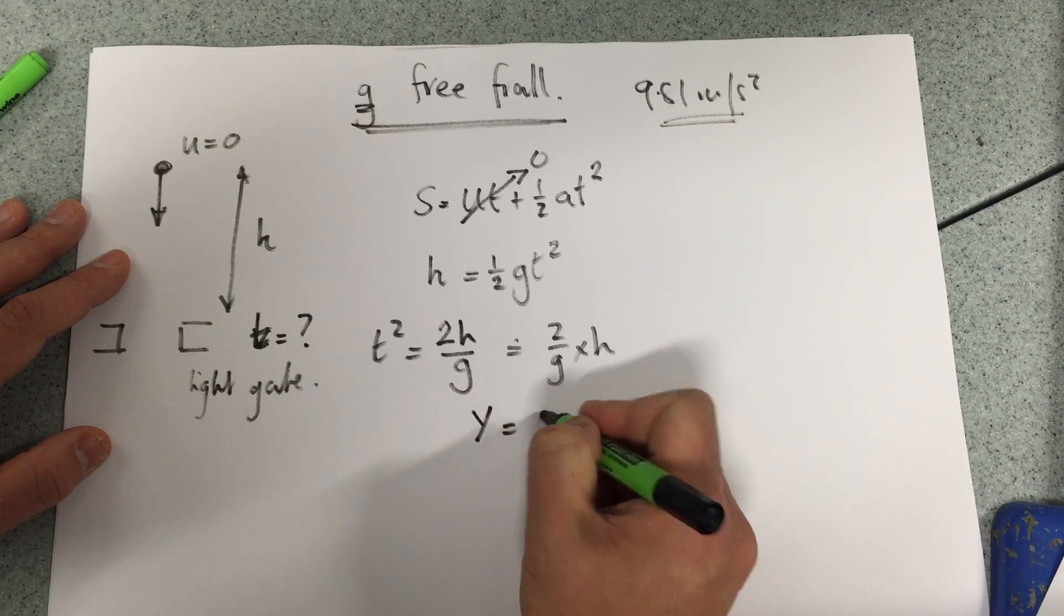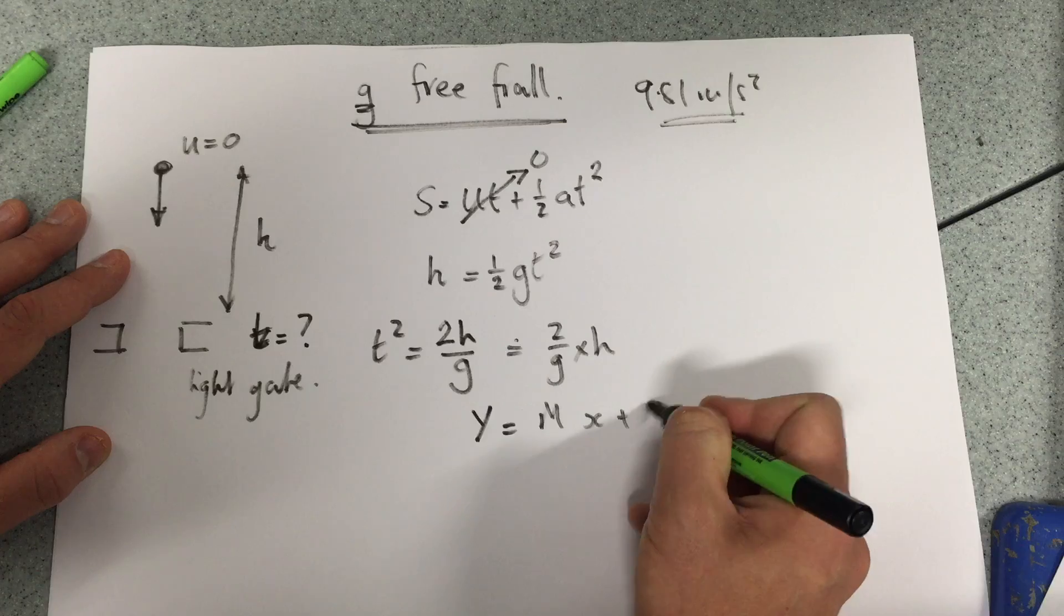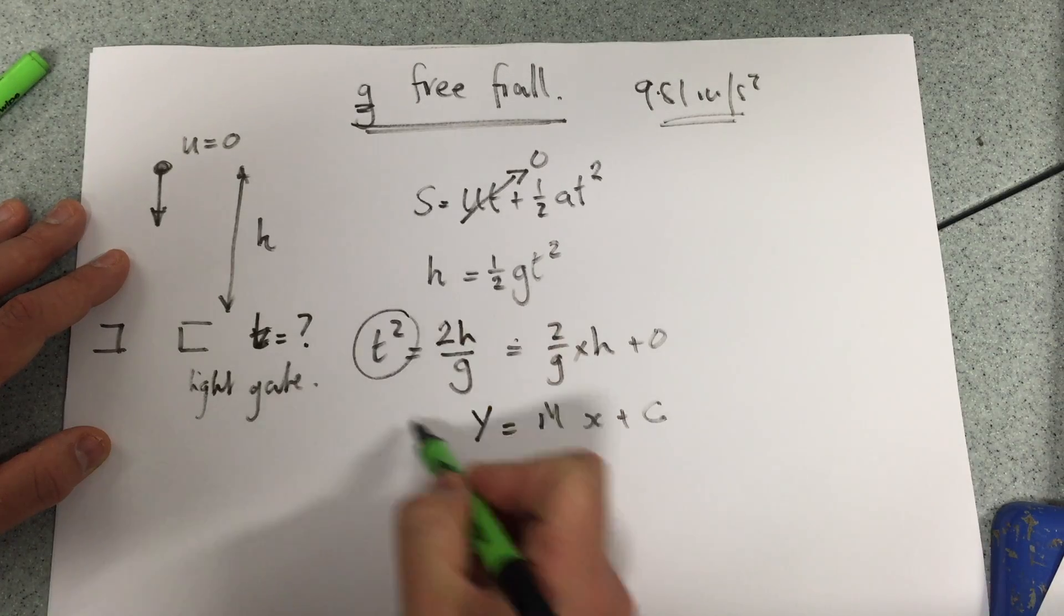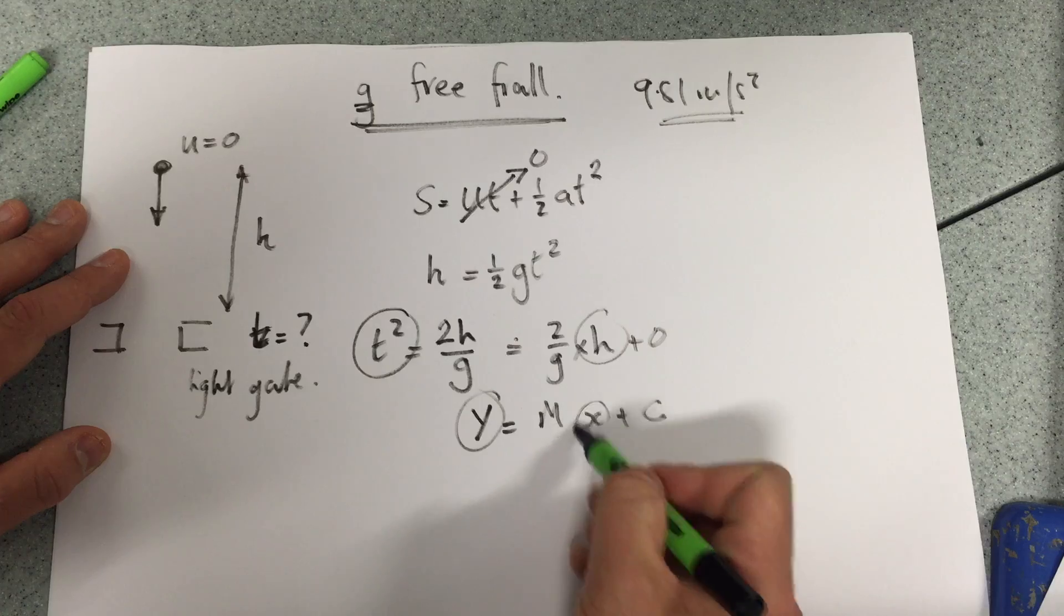So therefore, y equals mx plus c plus zero. If I plot t squared as my y, h as my x,